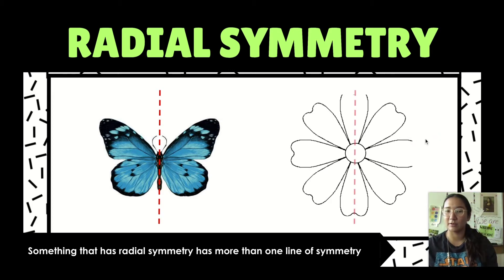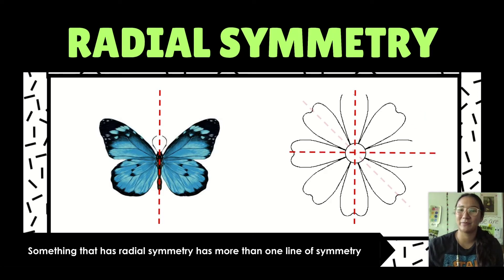But that's not the case with this flower. We have one line of symmetry, two lines of symmetry, three lines, and four lines of symmetry. So that flower shows radial symmetry.